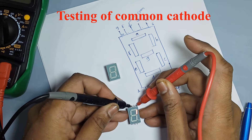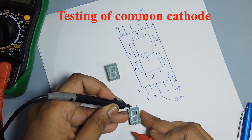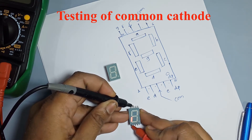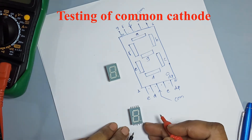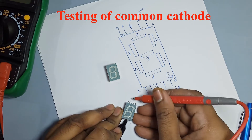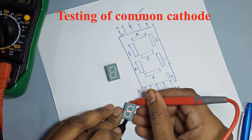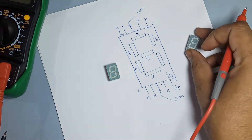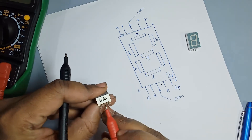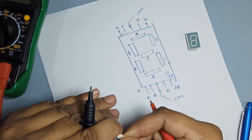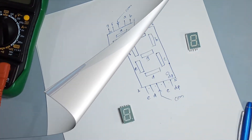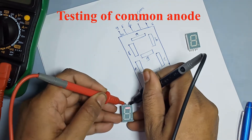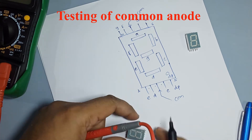Multimeter vaprun 7-segment test kara. Common anode madhe LED sarv anode pin common kelele astat. Multimeter vaprun 7-segment test kara.